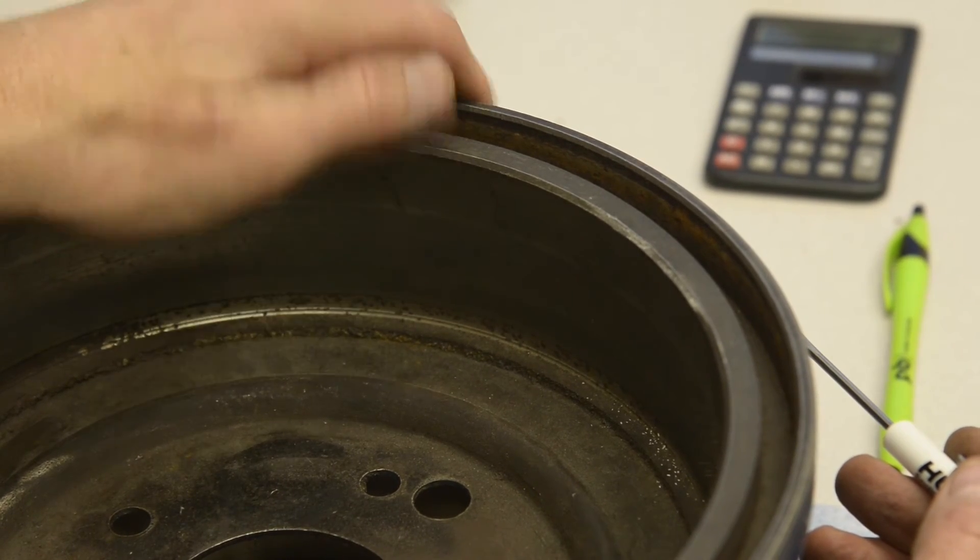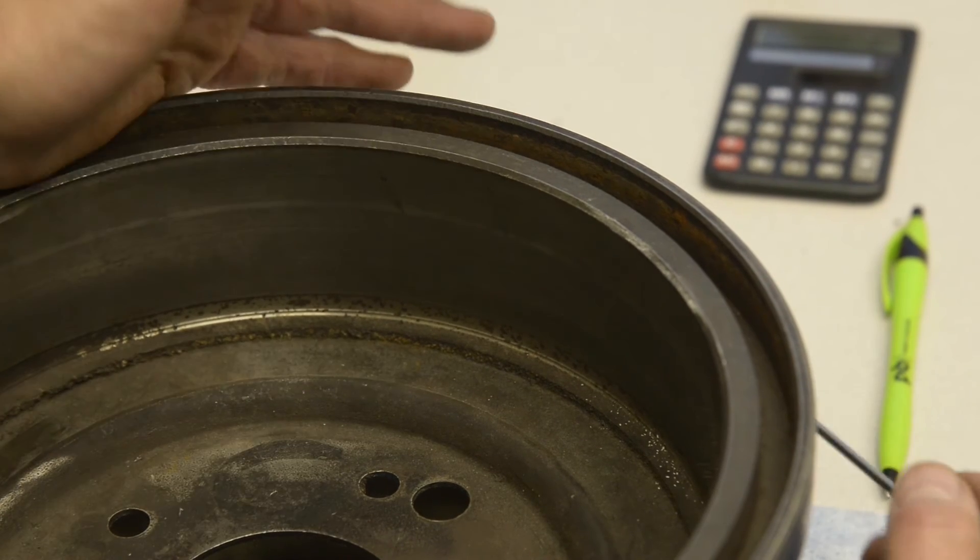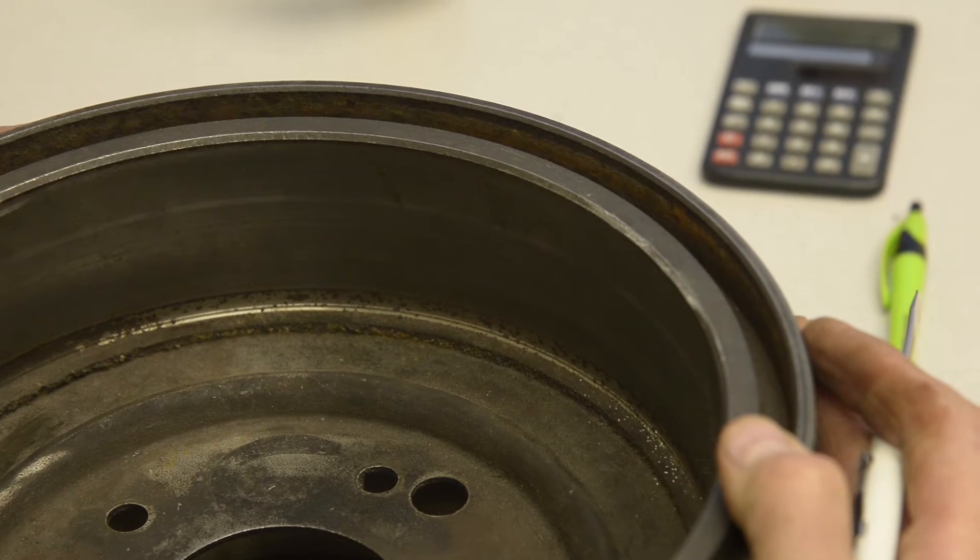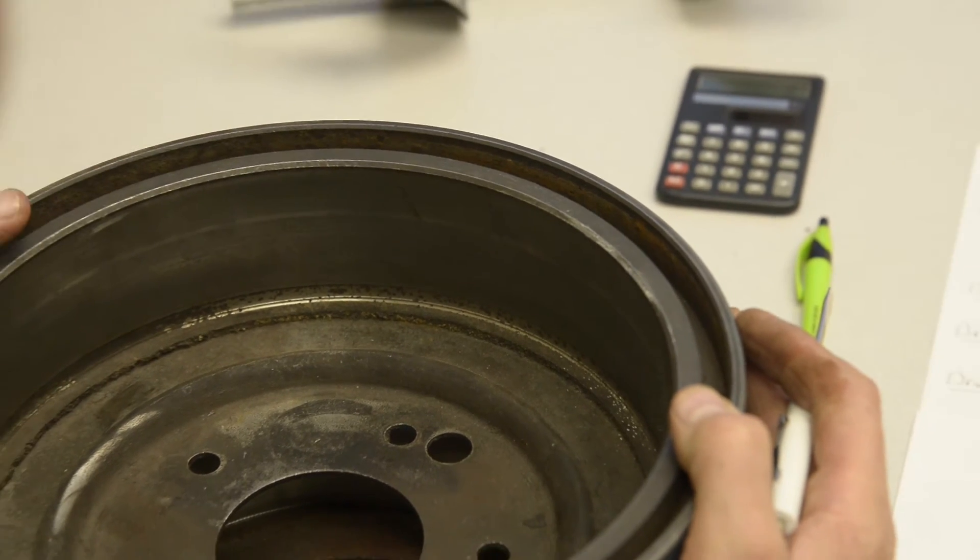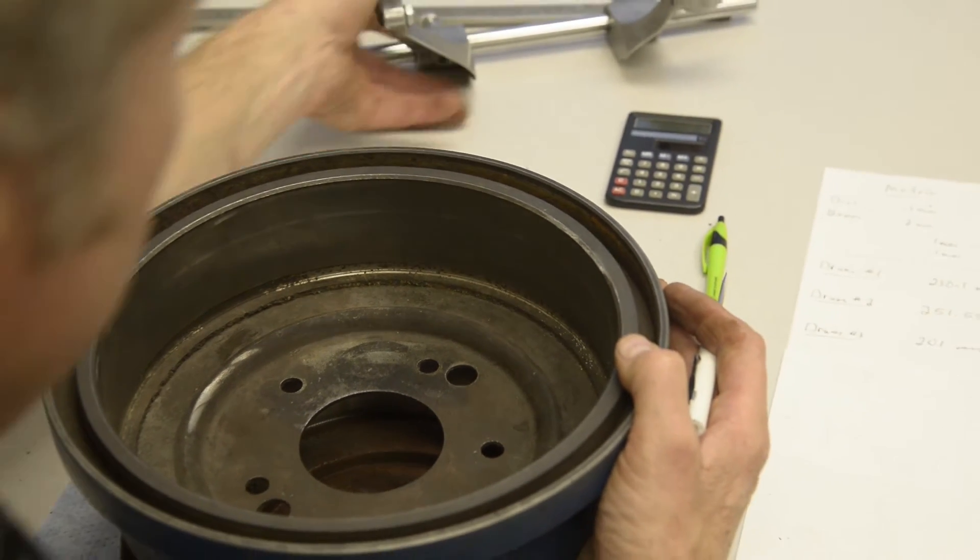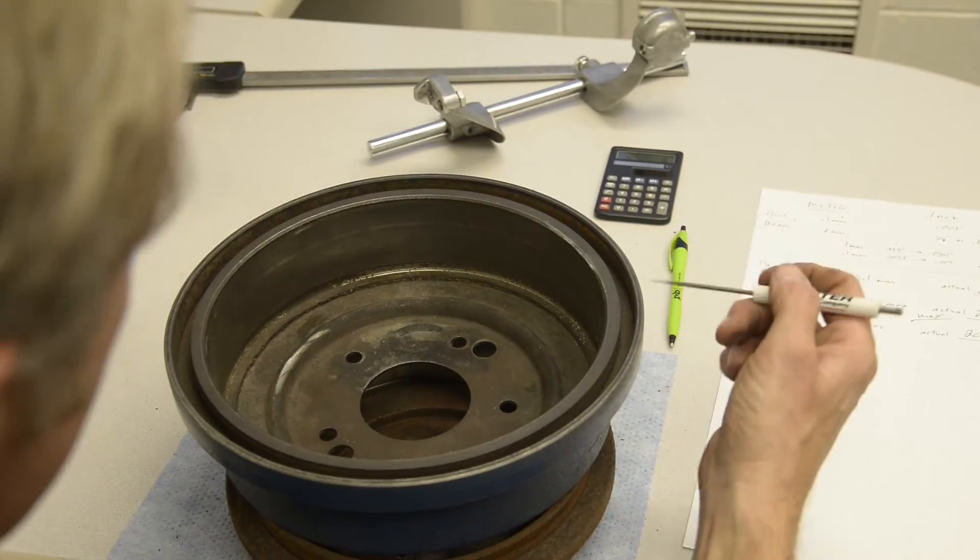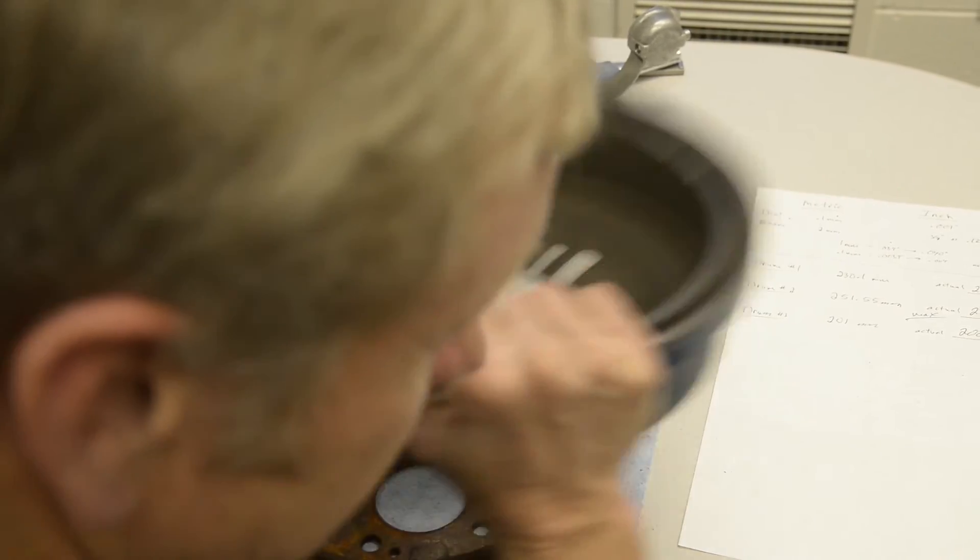Once we've machined it and the bevel's disappeared, it's likely the drum, if it came with a bevel, if the bevel's gone it's likely to be discarded. But we really should measure it just to make sure, because not all drums happen to have that bevel. A lot do, but not all.